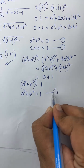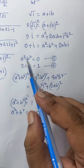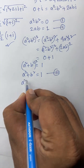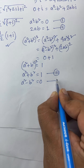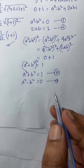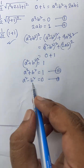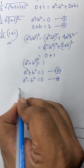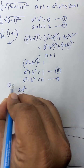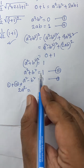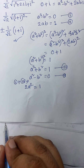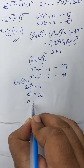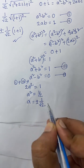So this is our third equation. Remember our first equation is a squared minus b squared equals 0. Now if I add both the first and third equations, the b squared terms cancel and we get 2a squared equals 1. Dividing both sides by 2, a squared equals 1 over 2, so a equals plus or minus 1 over square root 2.